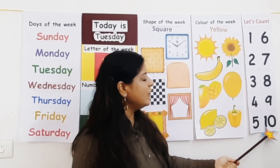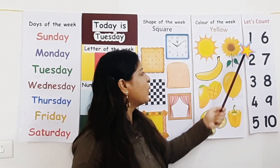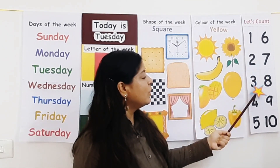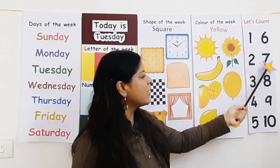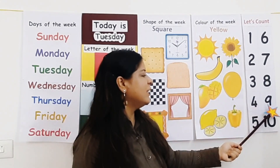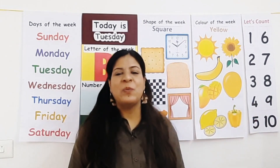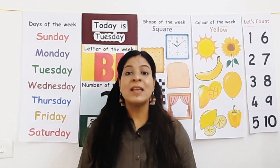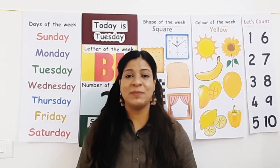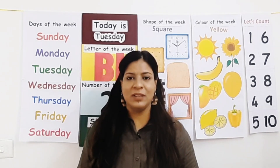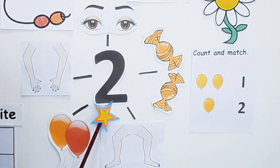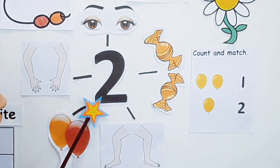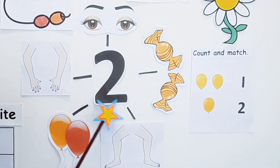Now say along with me: 1, 2, 3, 4, 5, 6, 7, 8, 9, 10. Well done! So children, today is Tuesday and on Tuesdays we learn about a new number. Today we are going to learn all about number 2. This is how number 2 looks — the formation is around and across, so there is a curve and there is a sleeping line.